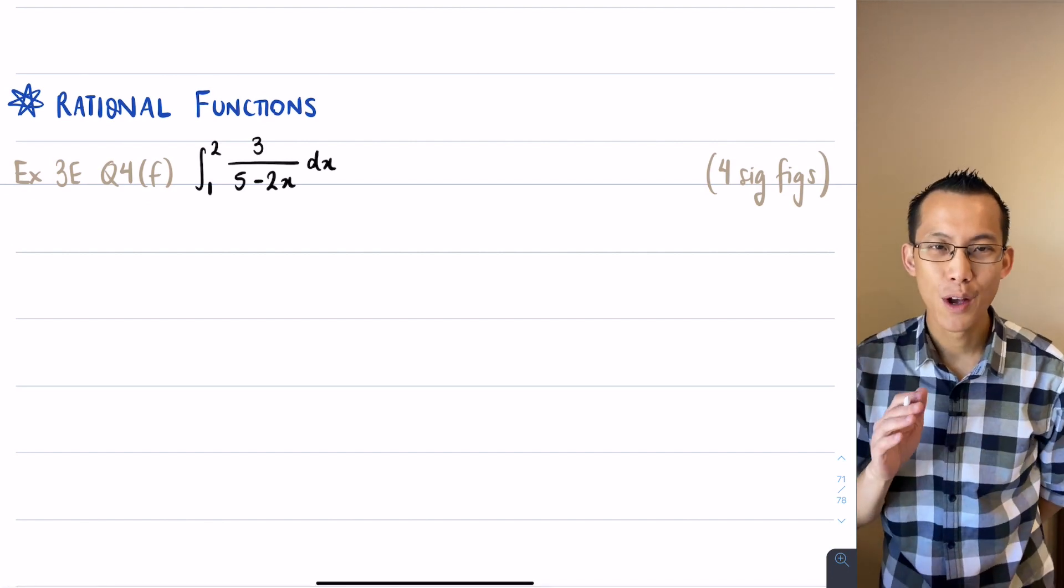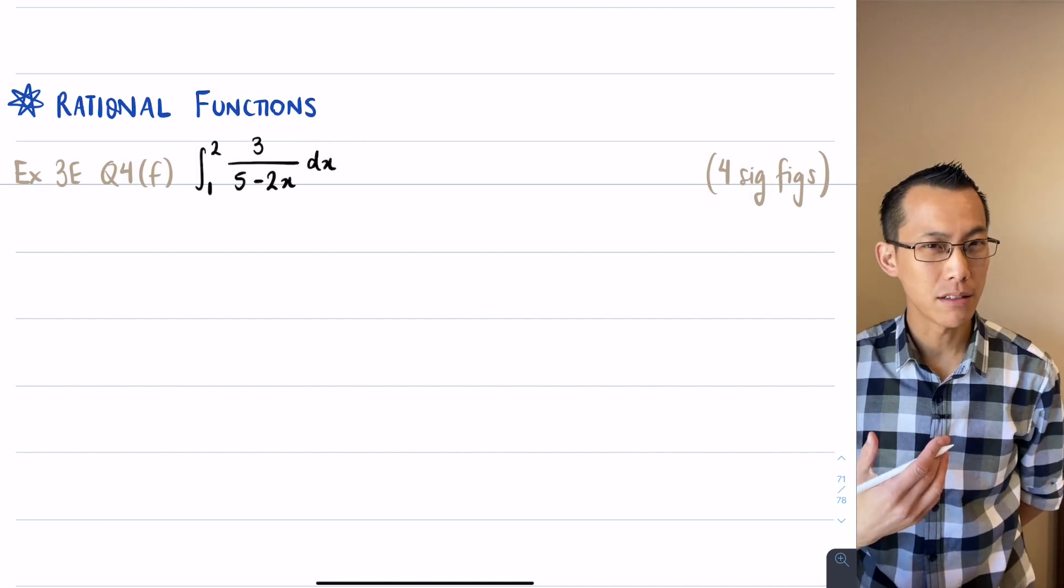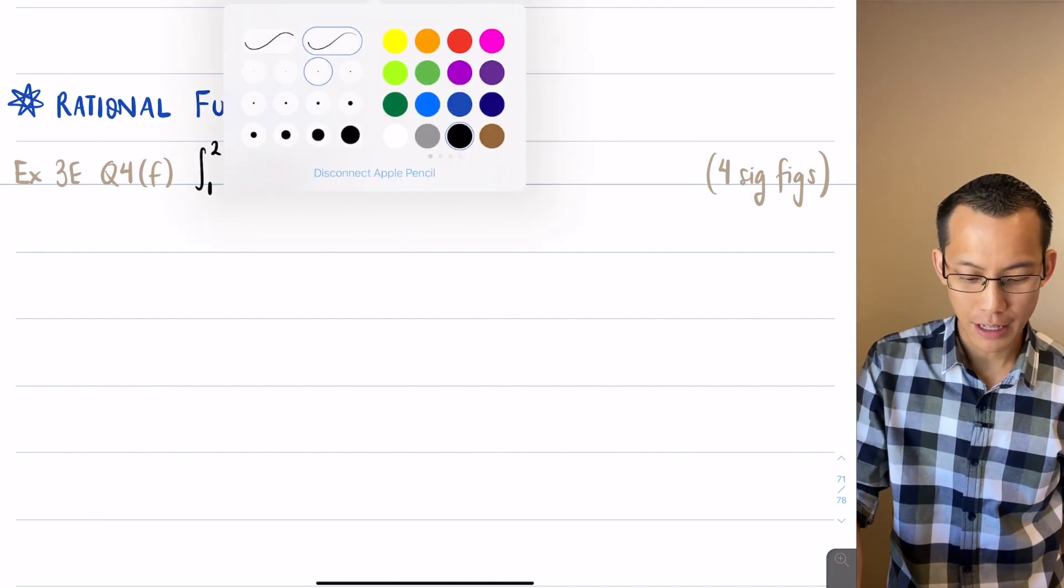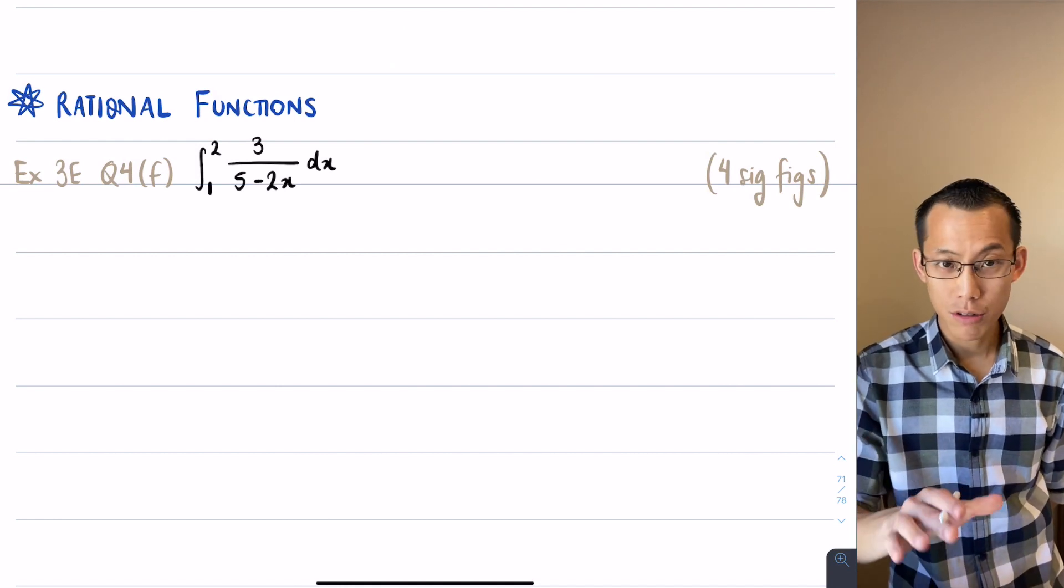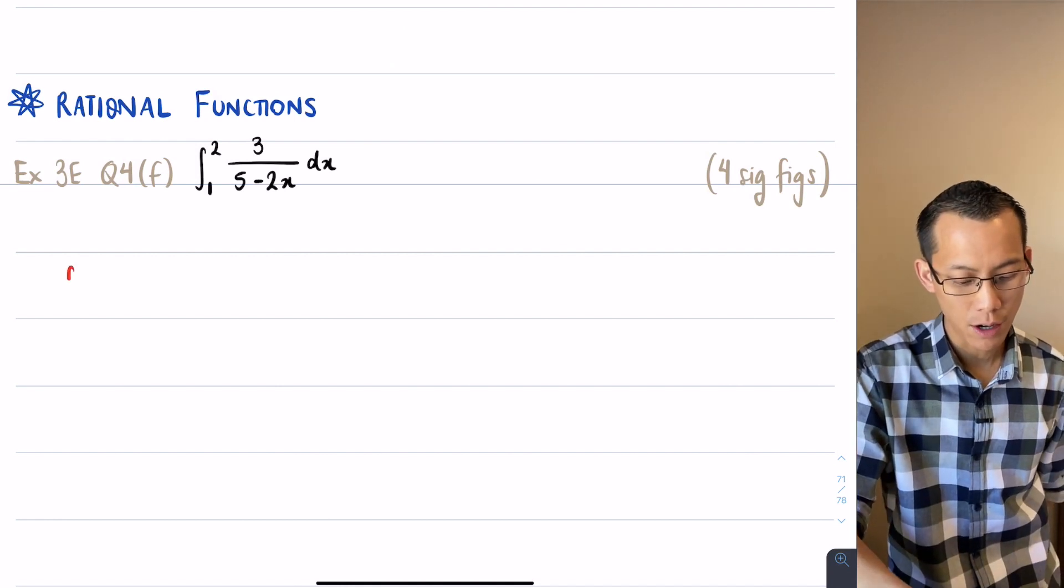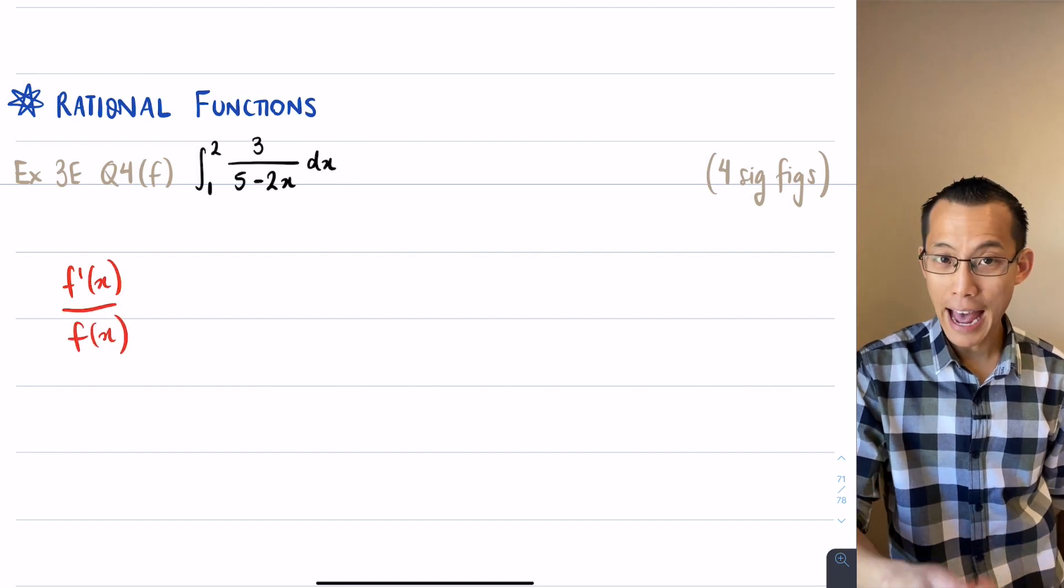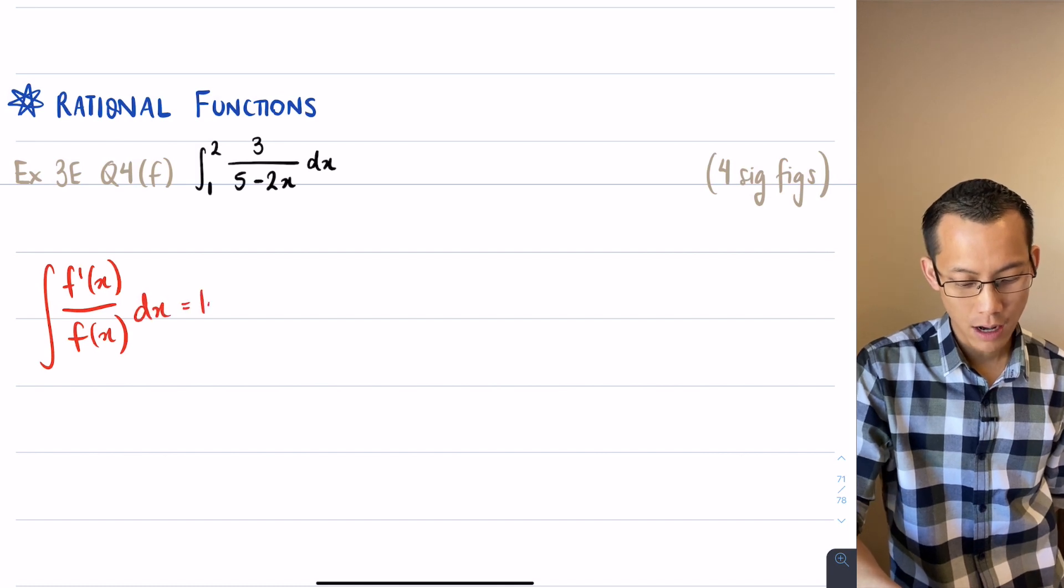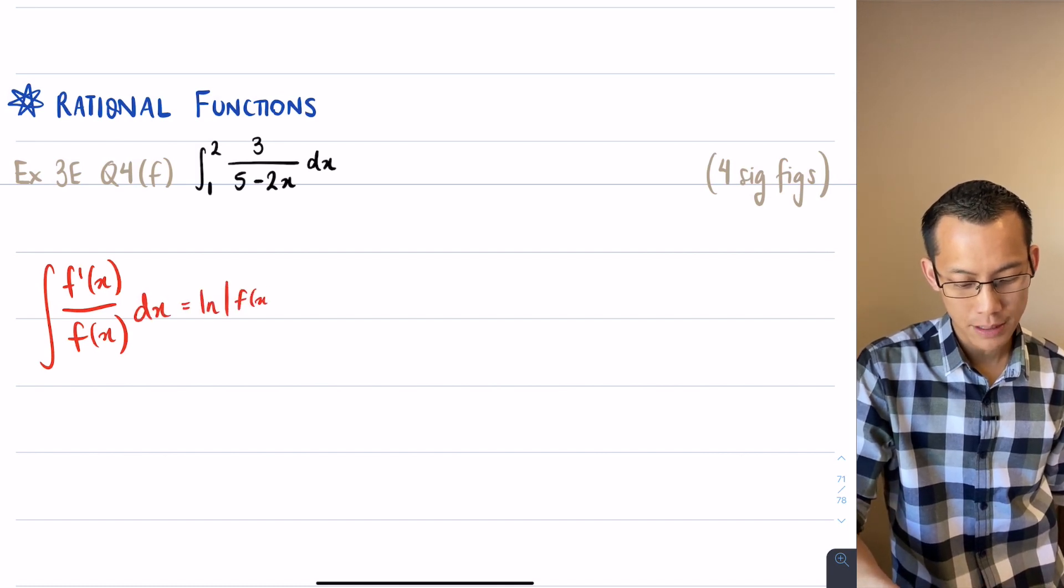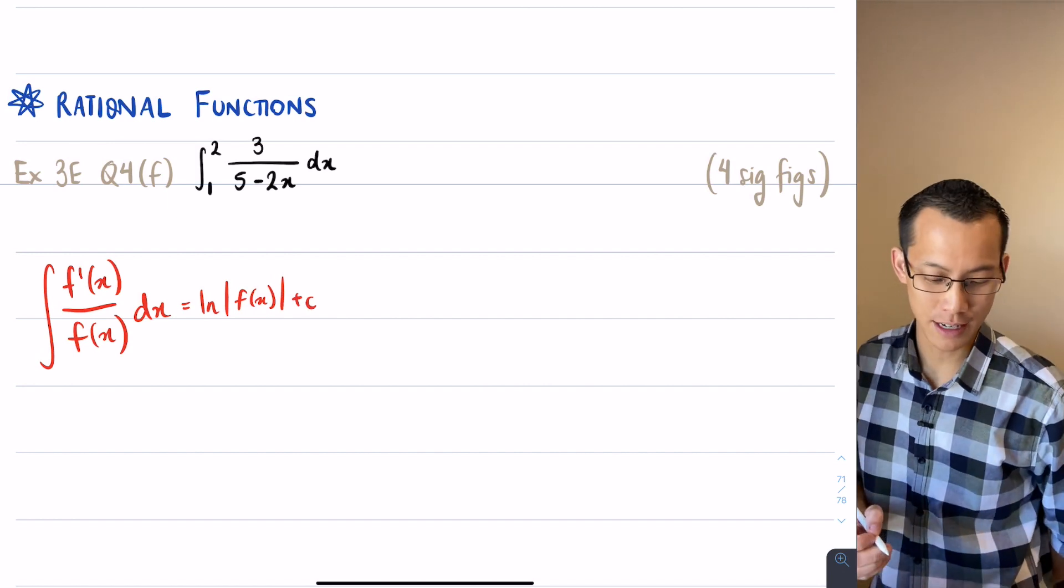Alright, so now we're moving into rational functions. These, as you recall, are the ones that are going to end up as logs. You've got your reference sheet there, but I want you to remember what we're searching for is something of the form f dash on f. If you have something like this and you're integrating it, then you will get log of the absolute value of that particular function, of course plus a constant if you have an indefinite integral.